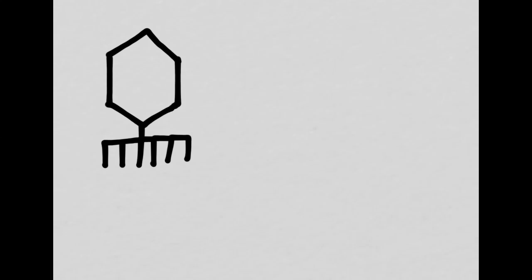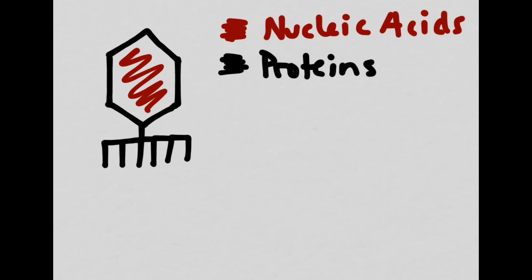They chose to do their work using bacteriophages. Bacteriophages have several different advantages, including the fact that they reproduce very quickly and are only made up of two of the big four, nucleic acids and proteins. They don't contain any lipids or carbohydrates. So here we can see that this bacteriophage has a protein coat on the outside, and then nucleic acids on the inside.